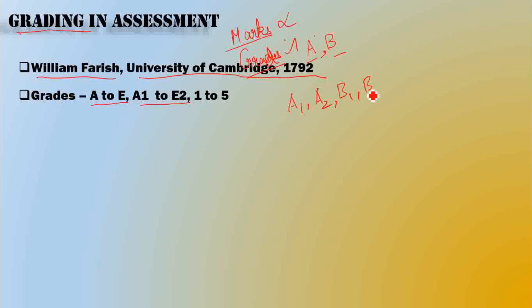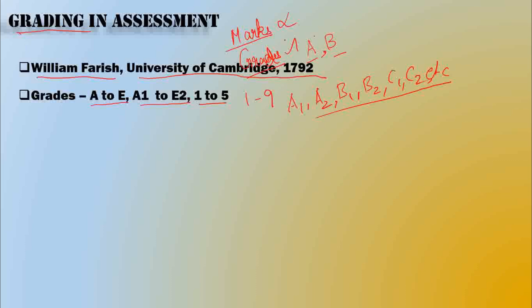The grades go A1, A2, then B1, B2, then C1, C2, and so on through E1, E2. When using numbers, the scale can range from 1 to 5 or 1 to 9 — so the range will be 1 to 5 or 1 to 9. This is a point scale.